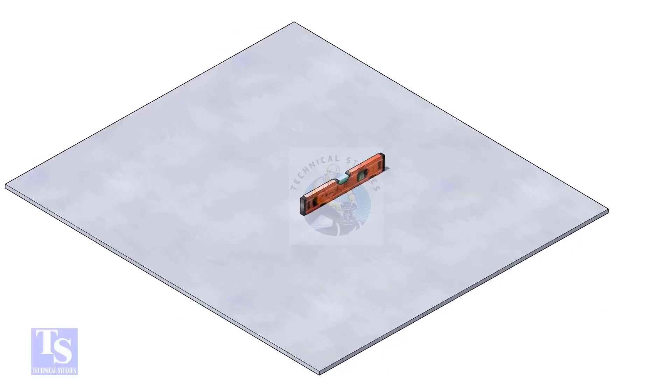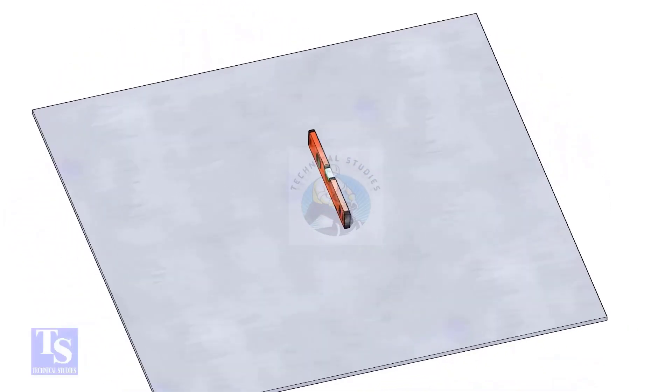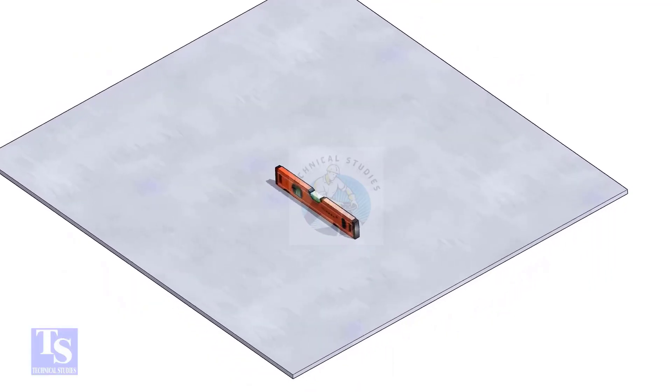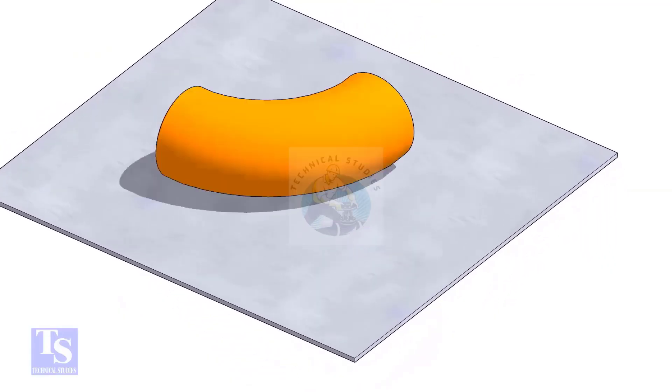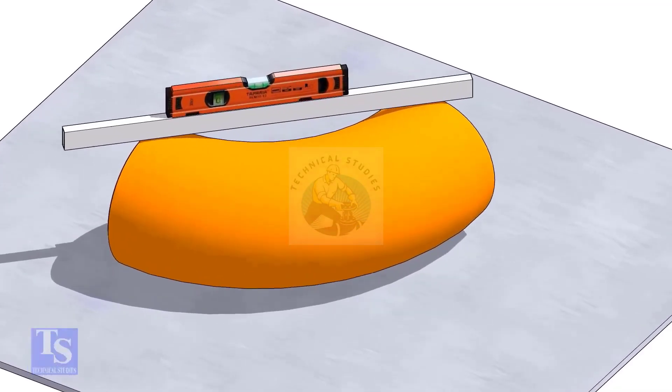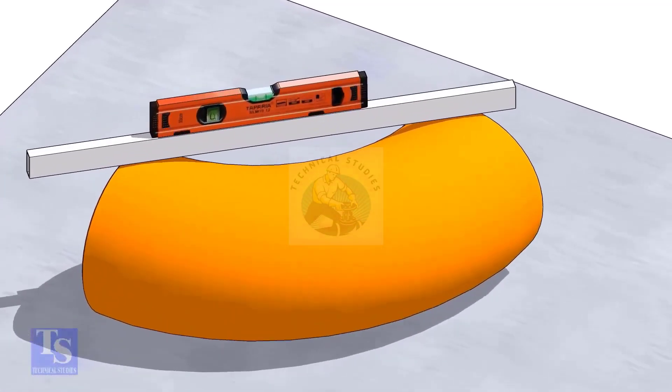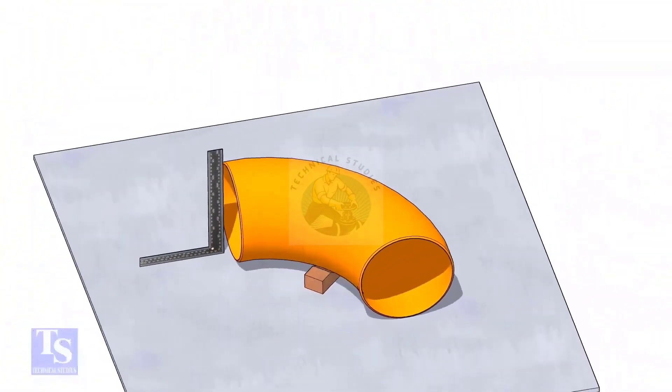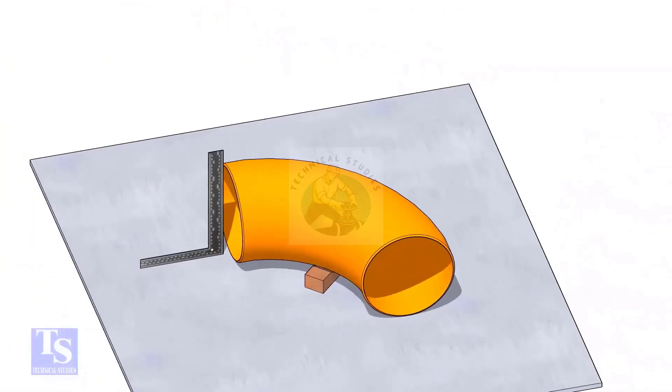Let us mark the center of the elbow. Choose a leveled plate and put the elbow on it. Check the level of the elbow. Check the squareness of the face of the elbow with the plate. If necessary, put some packing below as shown.